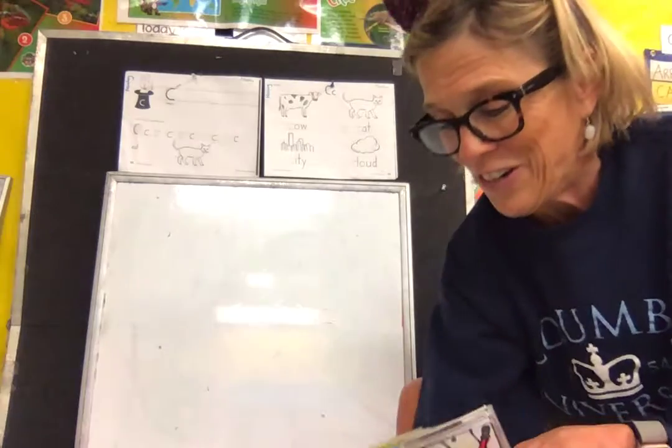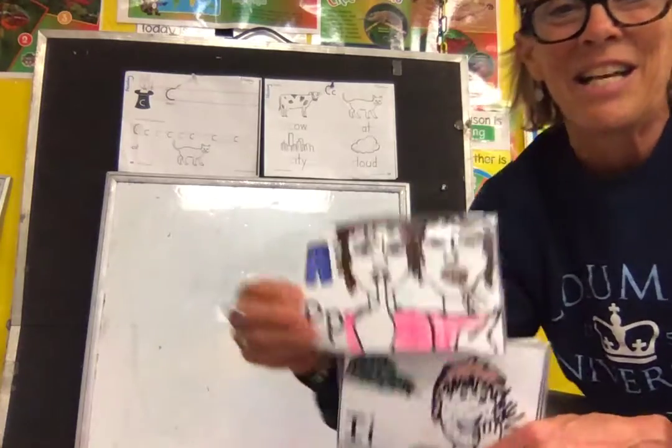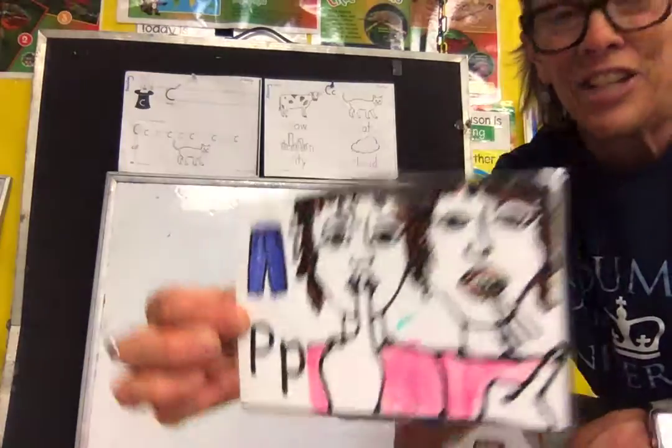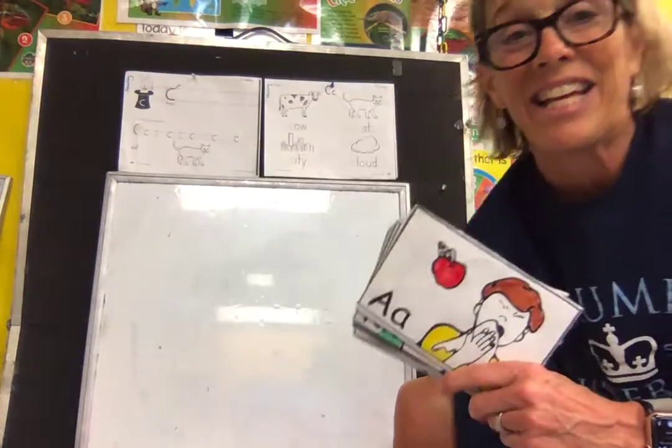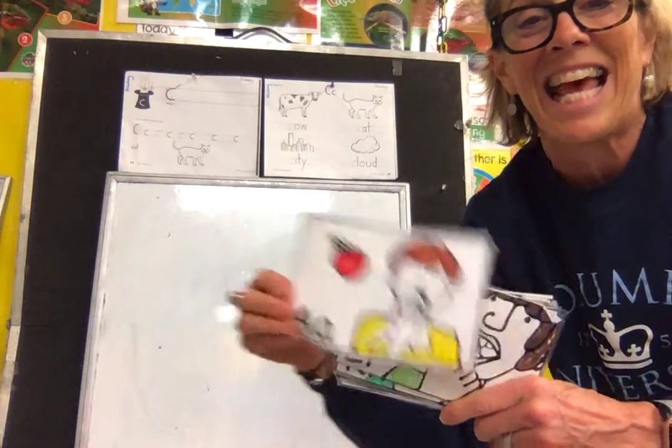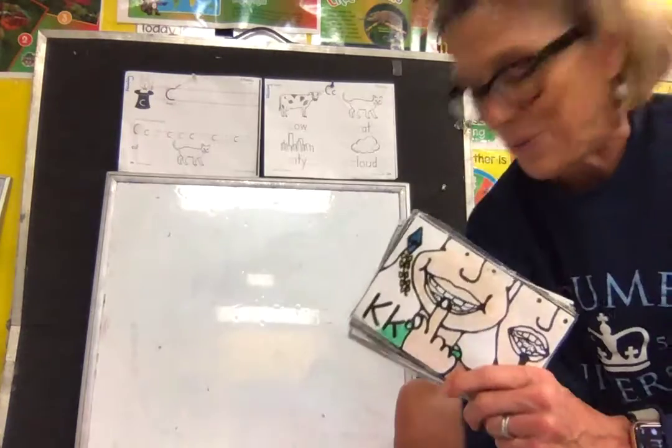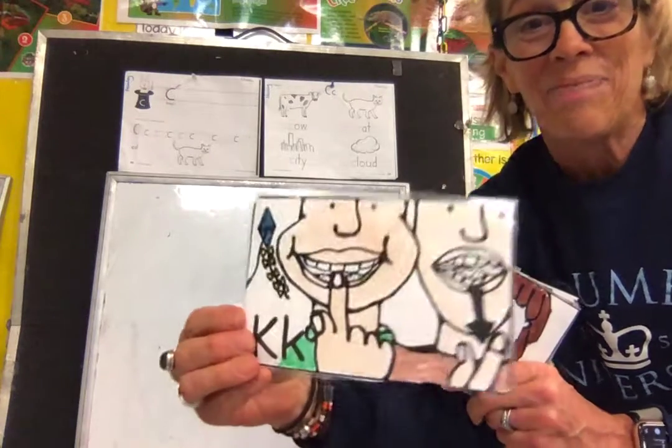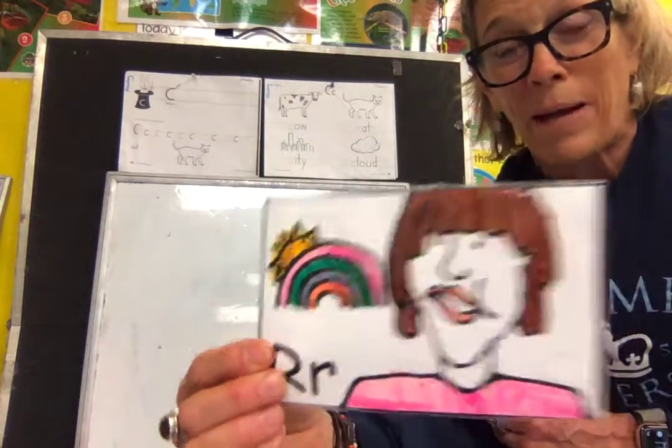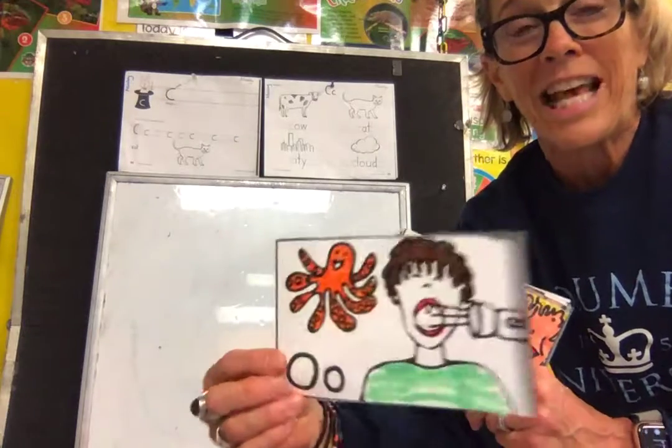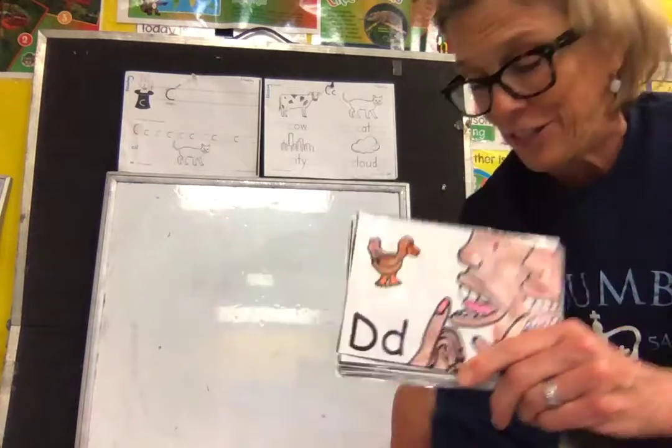T says tuh, good! J says juh, good! P says puh, good! I heard some people say pa, but just puh, good! I says ih. A says uh like you're going to say ah-choo! L says luh. Don't really lick your fingers, okay? K says kuh at the back of your throat. R says rr like a pirate. And O says ah. And S says sss, good!